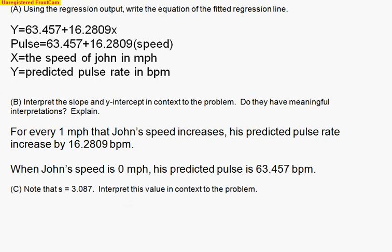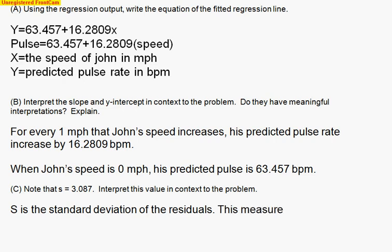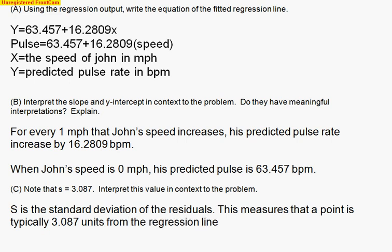Oftentimes, you're going to be asked to interpret the s value. First off, what is s? S is the standard deviation of the residuals. So sometimes it's worth just pointing that out. Maybe you don't remember how to interpret it, but if you could at least identify it as the standard deviation of the residuals, you might get some points. Now, what does it mean? Remember, it's how far a typical point is from the line. So I'm going to write that down. This measures that a point is typically 3.087 units from the regression line. Now, this is a nice interpretation, but it's not in context. It's 3.087 units from the regression line. Well, what does that mean?